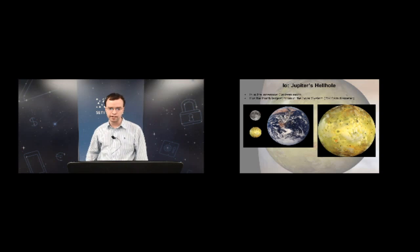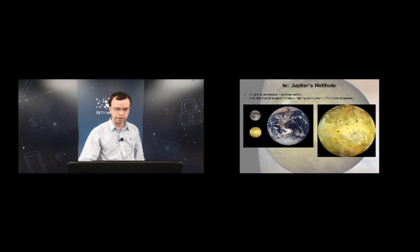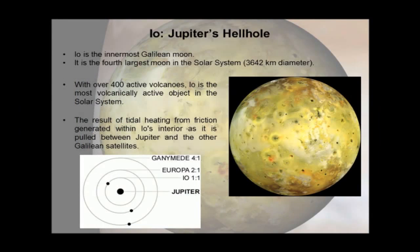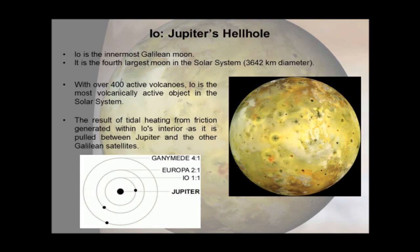IO is the innermost Galilean moon and the fourth largest moon in the solar system, just a little bit larger than Earth's moon. It's special because it has over 400 active volcanoes on its surface, making it the most volcanically active object in the solar system. All this volcanic activity stems from orbital dynamics: IO is in a 2:1 resonance with Europa and a 4:1 resonance with Ganymede.